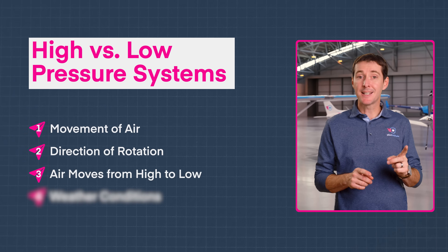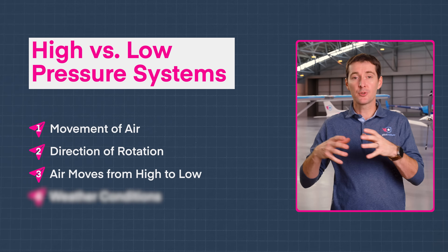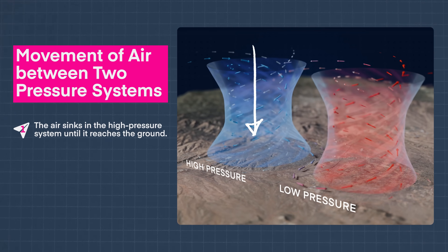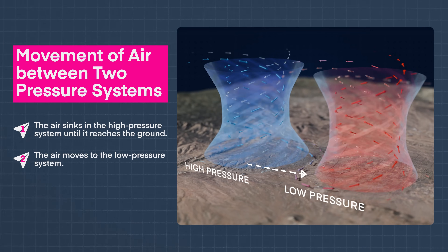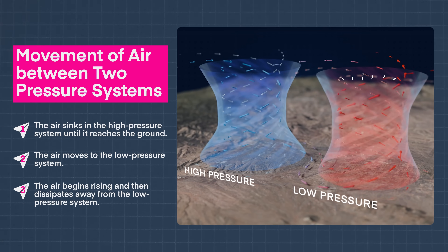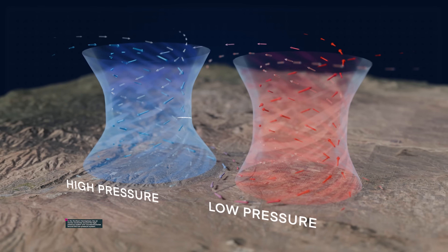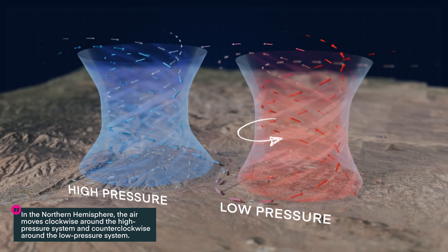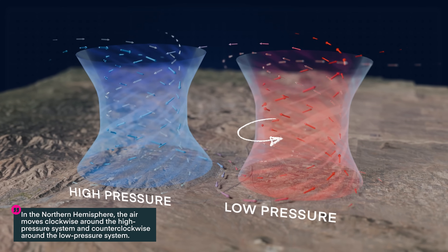Difference number three is that air moves from high pressure to low pressure. To understand how high and low pressure systems interact, let's track the movement of air between two pressure systems. The air starts sinking in the high pressure system until it reaches the ground, then it moves toward the low pressure system. At the low pressure system, the air begins rising and then dissipates away from it. In the Northern Hemisphere, the air moves clockwise around the high pressure system, then changes direction and moves counterclockwise around the low pressure system.